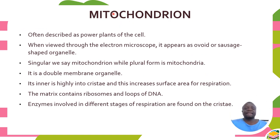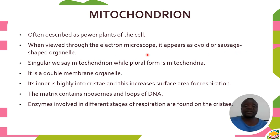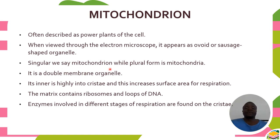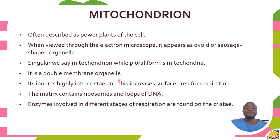Now we have the mitochondria. Mitochondria are often described as the powerhouse of the cell. When viewed through the electron microscope, they appear as ovoid or sausage-shaped organelles. The singular form is mitochondrion; the plural is mitochondria. It is a double membrane organelle, meaning it is bound by two membranes — an outer membrane and an inner membrane.